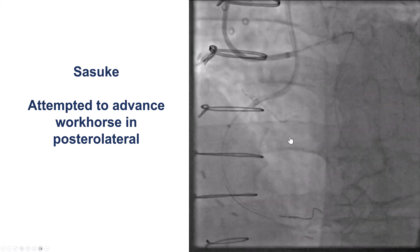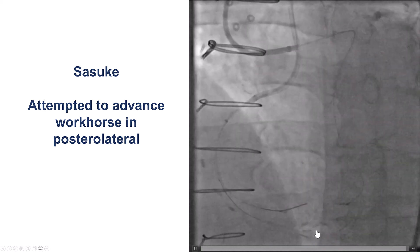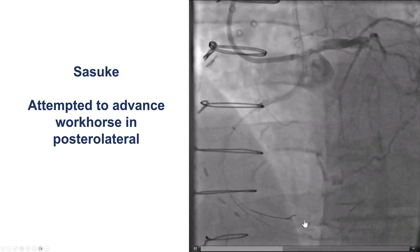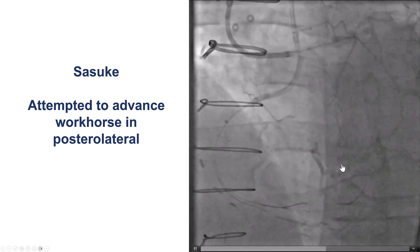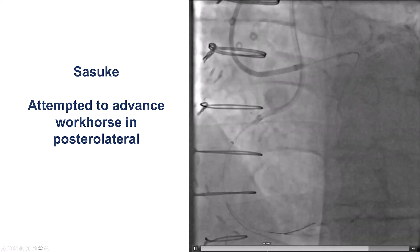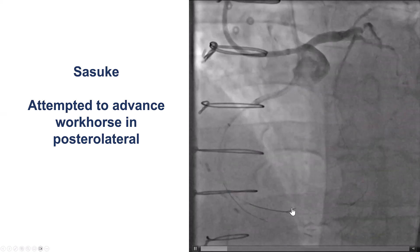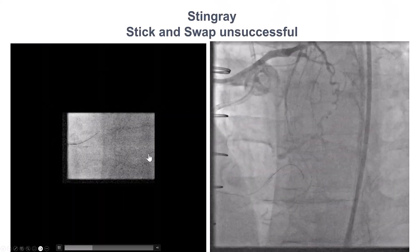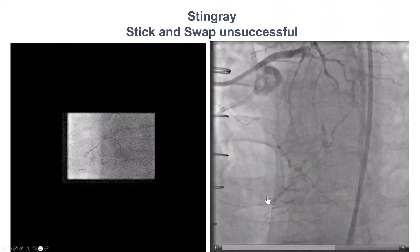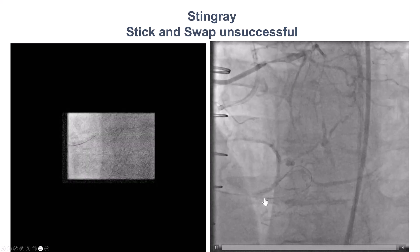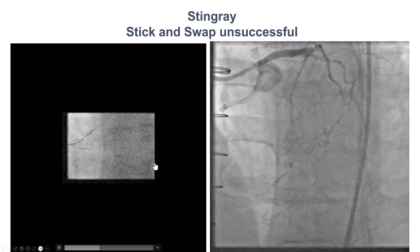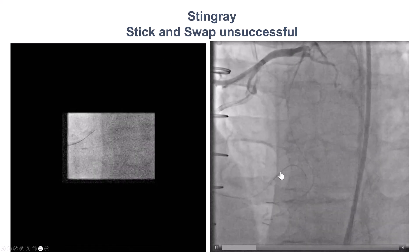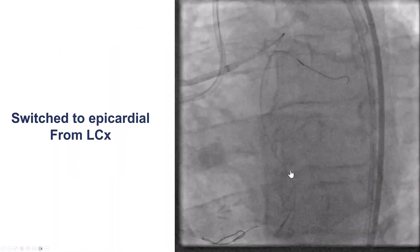We then externalized the guide wire. The next step was to try to secure the posterior lateral. The patient did have a large right posterior lateral, which was filling through the epicardial mainly. We did try a workhorse wire, but we had a lot of difficulty getting into the posterior lateral, and it turns out we were in the subintimal space. We ended up delivering a Stingray balloon to try to reenter, but despite multiple attempts with stick and swap, we were not able to cross into the true lumen.